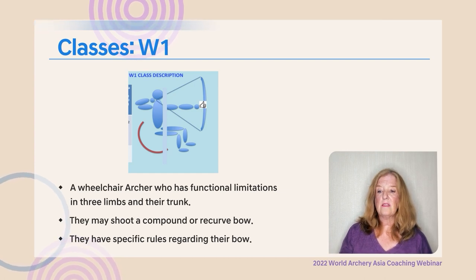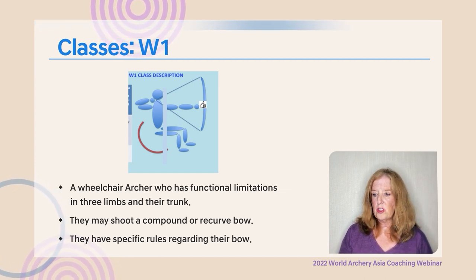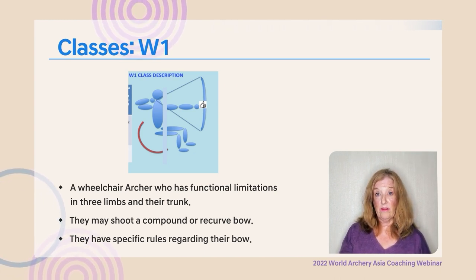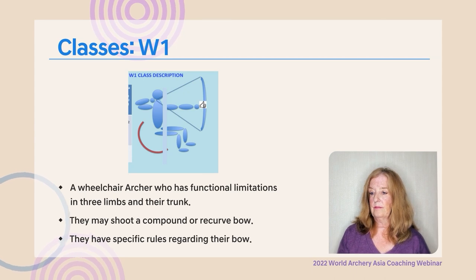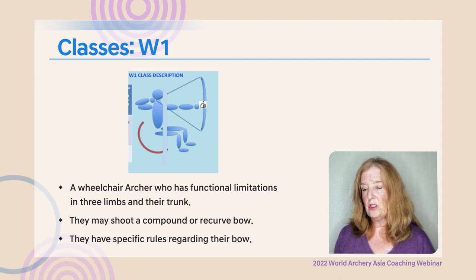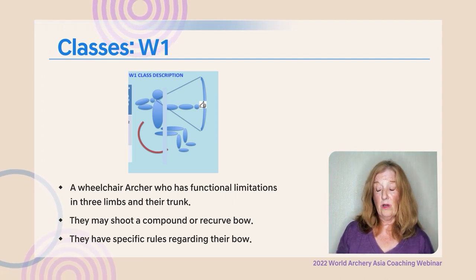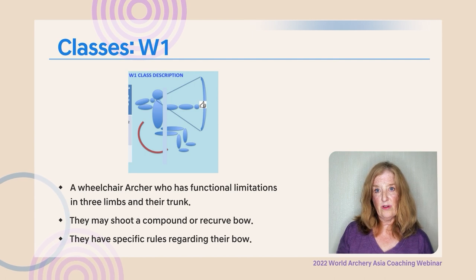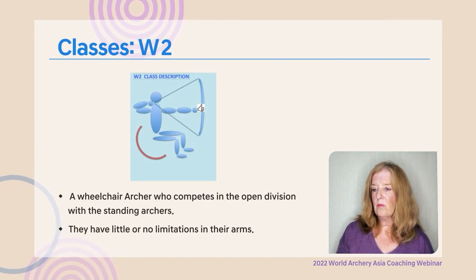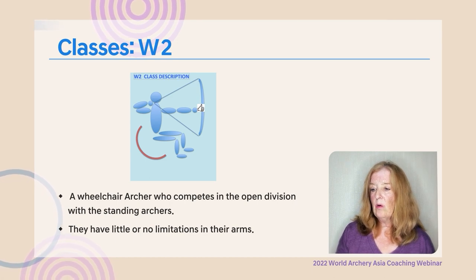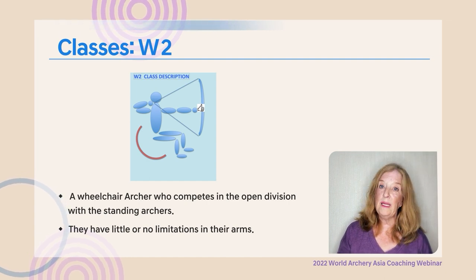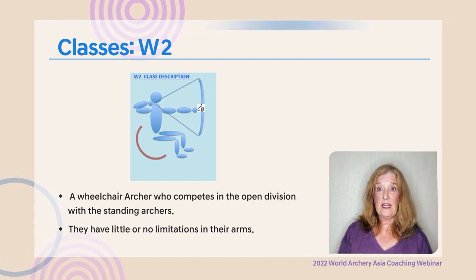The W1 class is a wheelchair archer with functional impairments in three of their limbs and their trunk. They may shoot a compound or recurve bow and have specific rules on their bows. W2s are wheelchair archers whose upper body is mostly intact, and they compete in the open division with the standing archers.